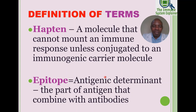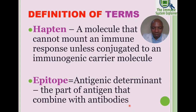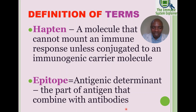The term epitope, synonymously called antigenic determinant, is the part of the antigen that combines with antibodies. The part of the antibody that combines with the epitope is called the paratope. The epitope is essentially the active part of an antigen that binds specifically to the paratope of an antibody as a product of the immune response.